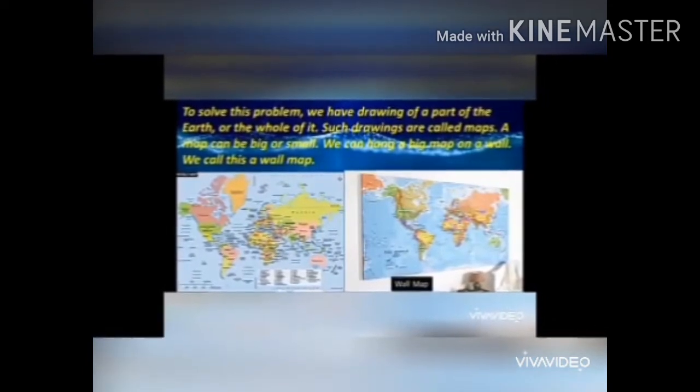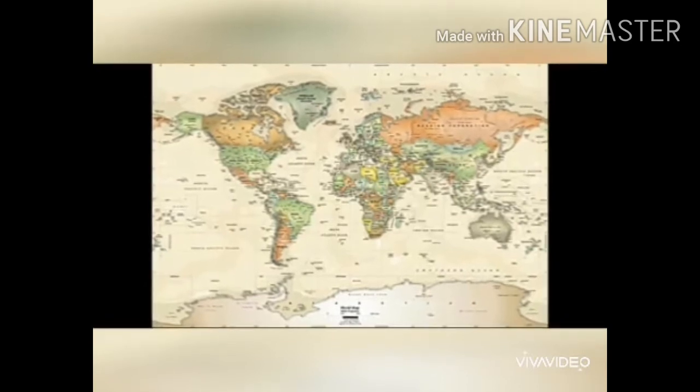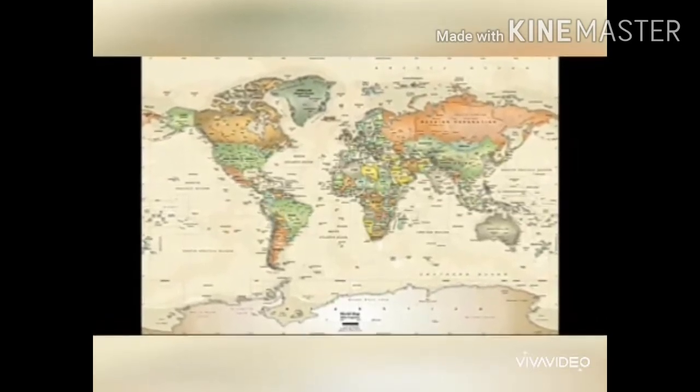To solve this problem, we have drawings of a part of the Earth or the whole of it — such drawings are called maps. A map can be big or small. We can hang a big map on a wall; we call this a wall map. Since a globe is a model of the Earth shaped like a big ball, it is difficult to carry it everywhere. For the sake of convenience, maps were created. A map gives us a miniature picture of the whole Earth, showing areas of land, sea, physical features, cities, roads, and more.